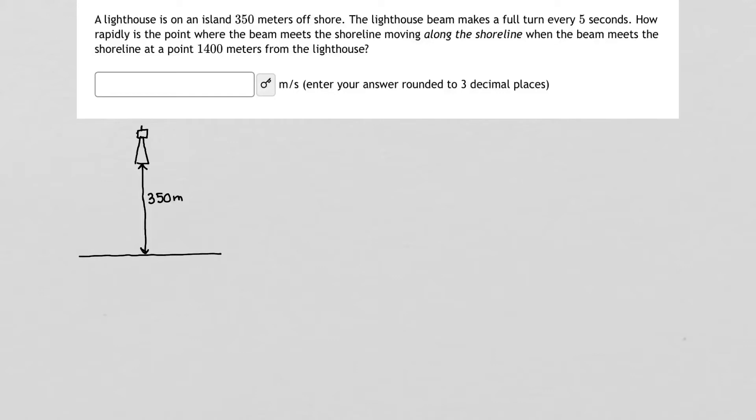Now what do lighthouses do? Well they turn, they send a beacon of light and they do so in a fashion that goes 360 degrees. So that light is going to be turning in a counter-clockwise fashion, and as it does it projects out and at some point that light is going to be reaching the shoreline and once it hits that shoreline it hits at a point.